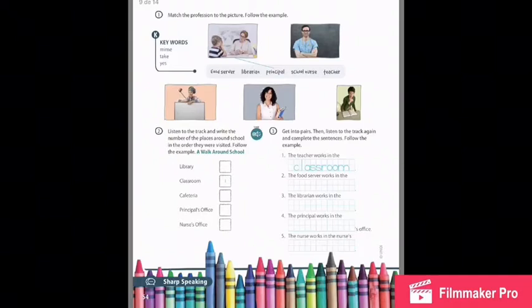Then picture number one is a principal. So, you have to match all the pictures with the correct word. Number two. In this activity, you have to listen to the track and complete. In this case, you have to write a number or the number from one to five and according to the places that you listen in the track.